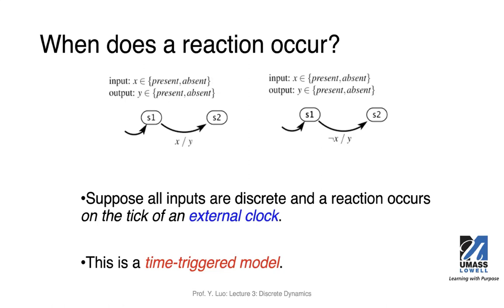For the time-triggered model, there won't be a case where your predicate is not evaluated — it will be evaluated every cycle. We're going to look at the status or value of the pure signal, whether present or absent, and based on that we'll take the transition or not.